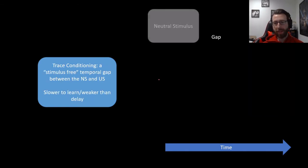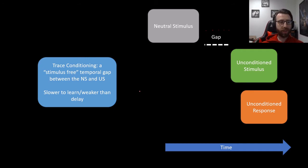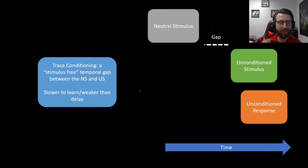Next up is trace conditioning, which is very similar to delay conditioning, except there is a stimulus-free gap between the neutral stimulus and the unconditioned stimulus. The neutral stimulus occurs, there's a period of time where there is nothing, and then the unconditioned stimulus happens afterward. This produces slower or weaker learning than delay conditioning because this space weakens the association, but it's still quite possible to learn. A lot of things in day-to-day life happen in the form of trace conditioning — perhaps you hear a rattlesnake and then there might be 10 seconds of silence before it bites you, or a toaster might buzz and then there's a delay before it sparks and gives you a shock. The general rule is: the closer the stimuli are in time, the easier it is to learn the relationship.